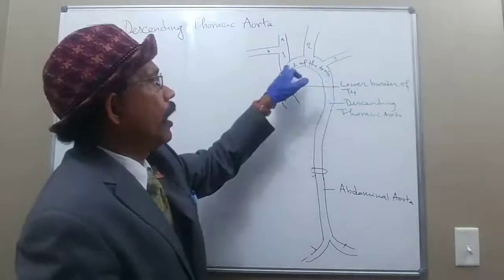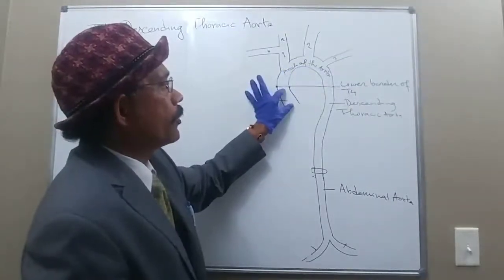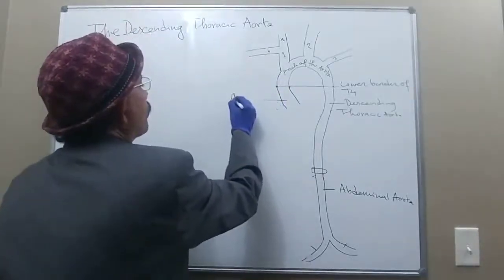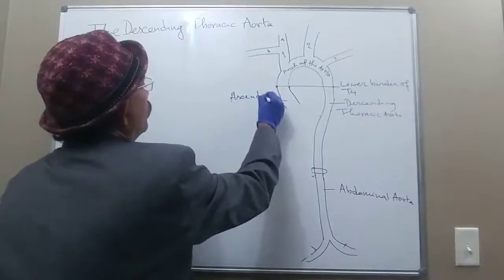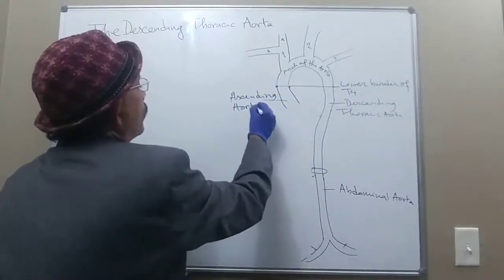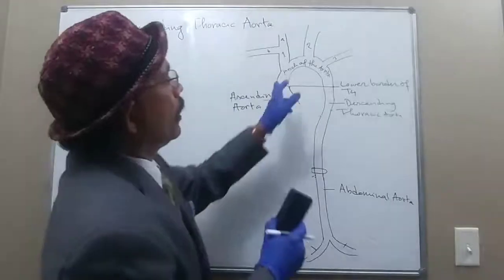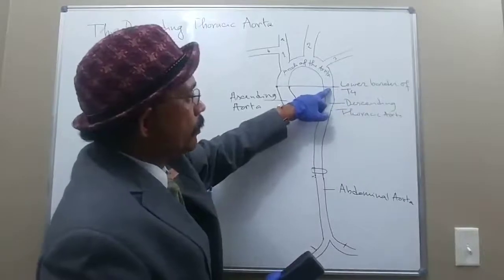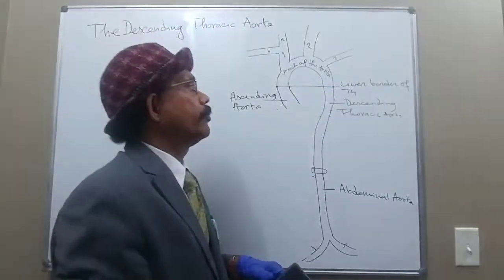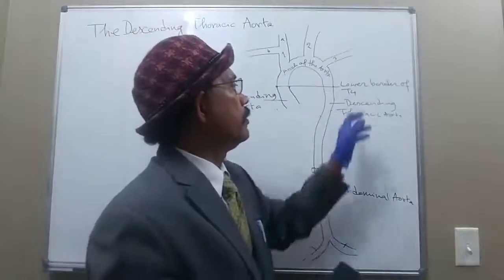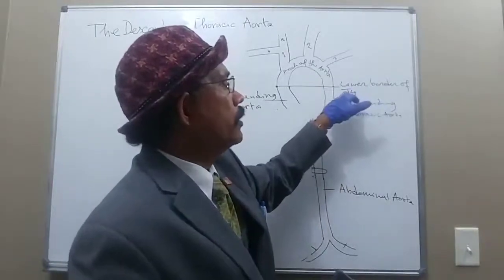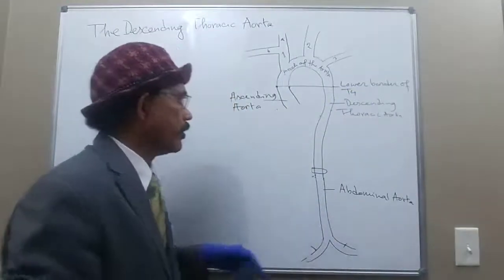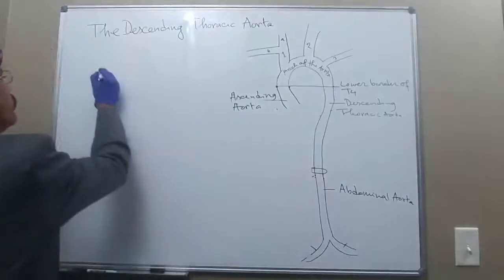The arch of the aorta is a continuation of the ascending aorta. This is the ascending aorta, this is the arch of the aorta, and then we have the descending thoracic aorta. It extends from the lower border of the body of the T4 thoracic vertebra to the T12 thoracic vertebra.